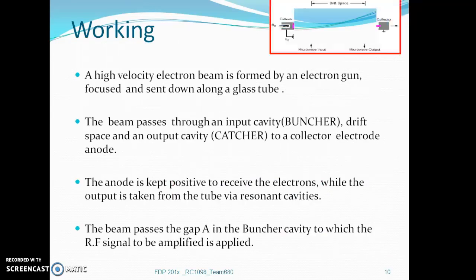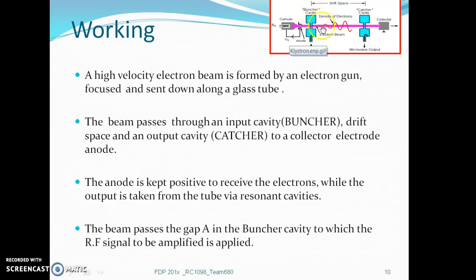Working of a Klystron. A high velocity electron beam is formed by an electron gun, focused and sent down along a glass tube. The beam passes through an input cavity (buncher), drift space and an output cavity (catcher) to a collector electrode anode.